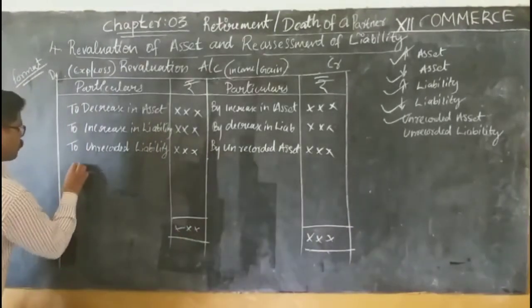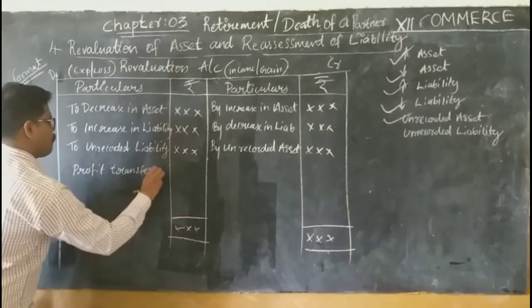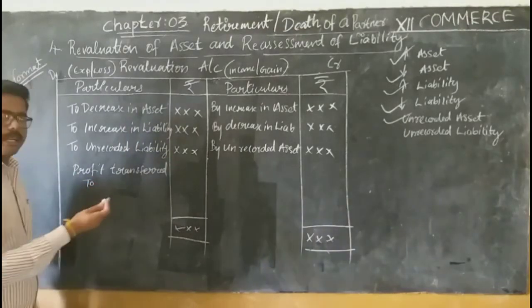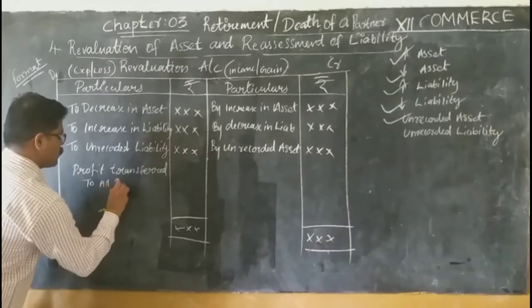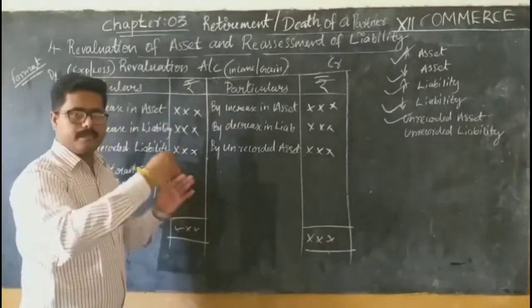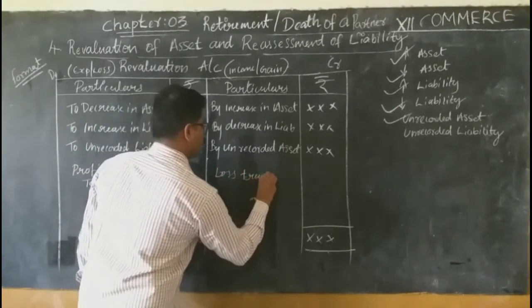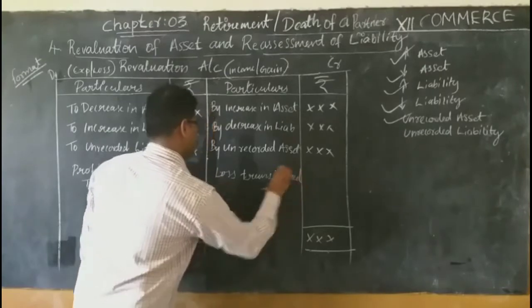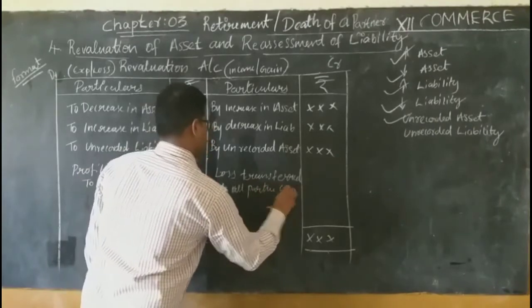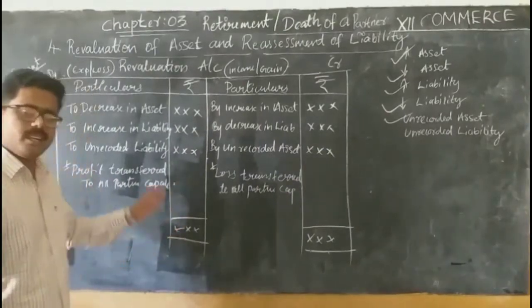If the debit side is higher, that is a loss; if the credit side is higher, that is a profit. Whatever profit or loss results is transferred to all partners' capital accounts in their old ratio.